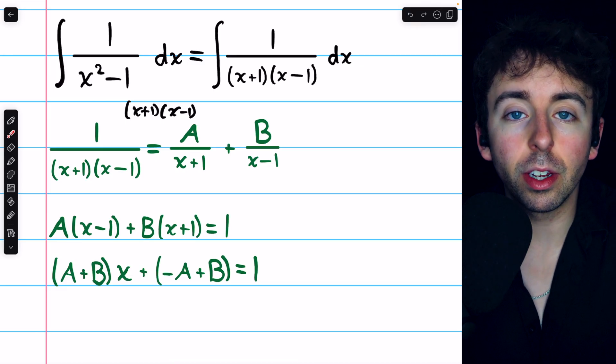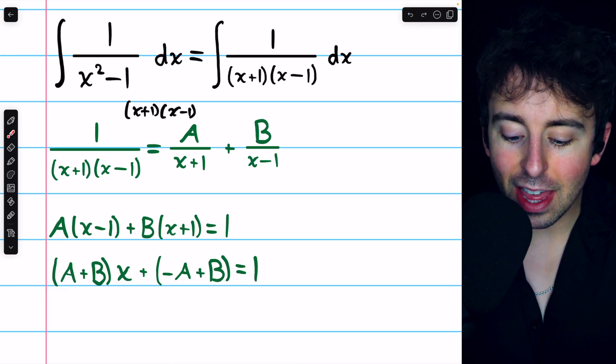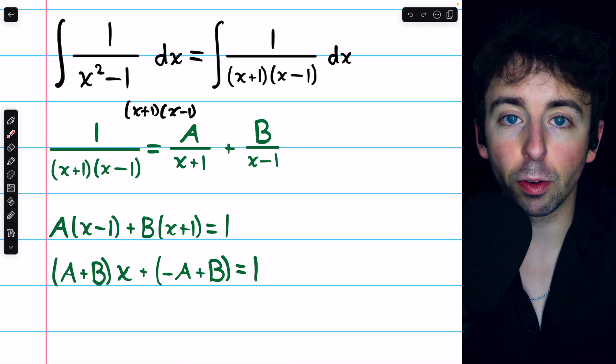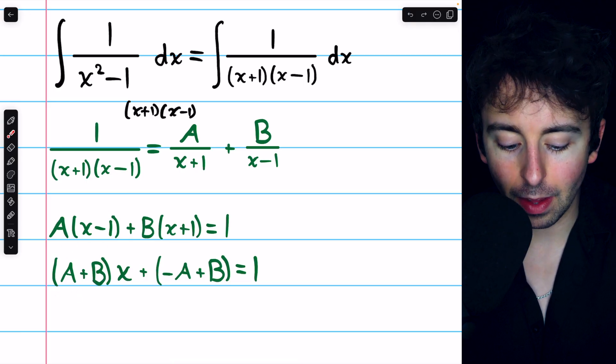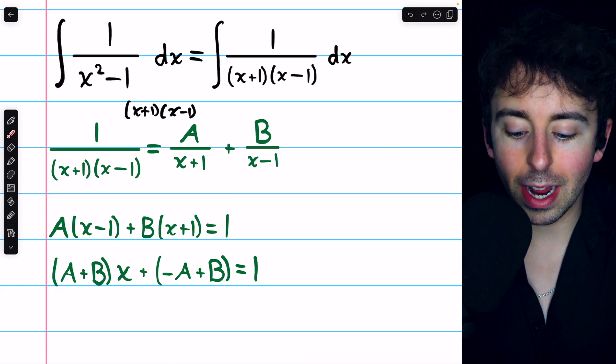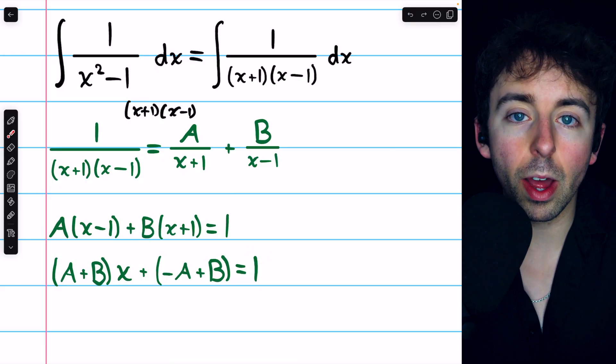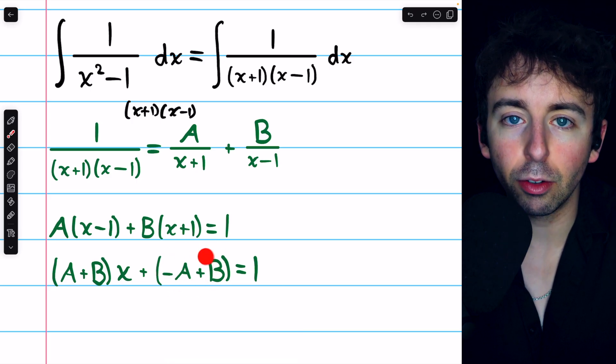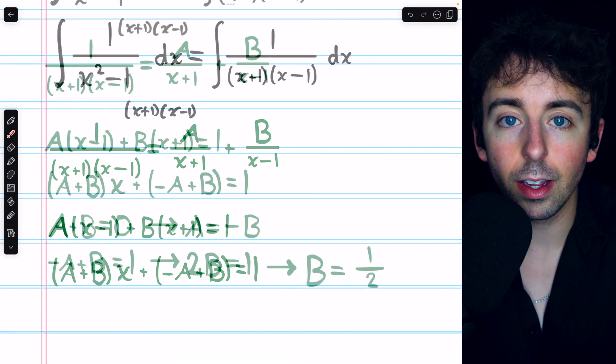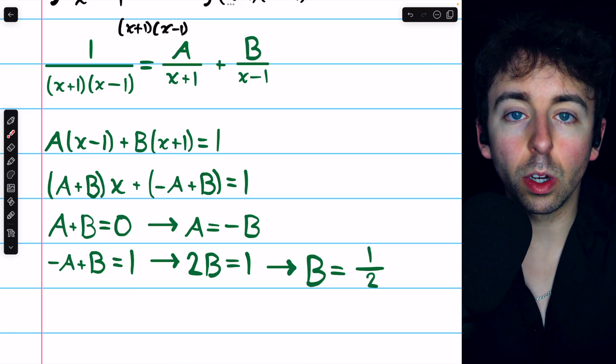We'll use the method of equating coefficients. There are zero x's on the right, so A plus B, the x's on the left, must equal zero. On the other hand, there's a constant of one on the right, so our constants on the left, negative A plus B, must equal one. Thus, we get these two equations.